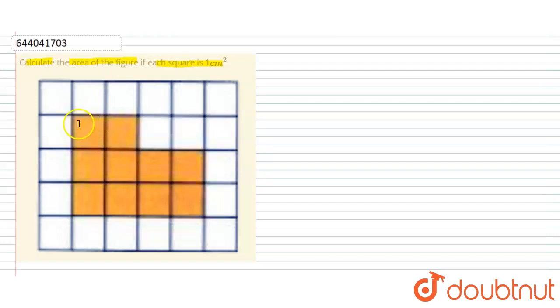So the number of boxes which is shaded is 1, 2, 3, 4, 5, 6, 7, 8, 9, 10. So there are total 10 boxes which are shaded.